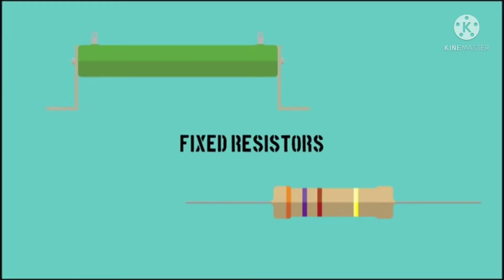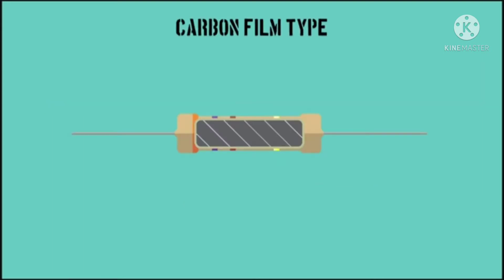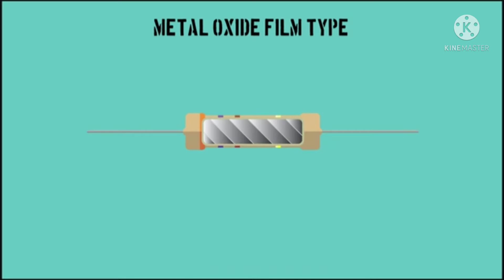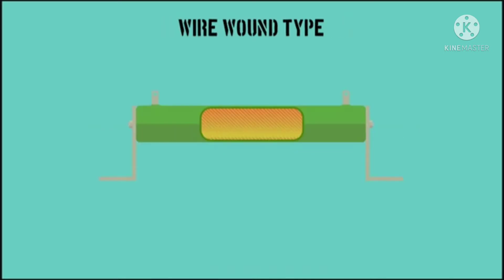Fixed resistors are the most common. They are used to set the right conditions in a circuit. Their resistance is fixed and does not change. Some types of fixed resistors are carbon film resistors, where a film of carbon material is wrapped around a ceramic cylinder. Metal oxide film resistors, where a metal oxide is wrapped in the same way, and wire-wound resistors, which are often used for higher power applications.